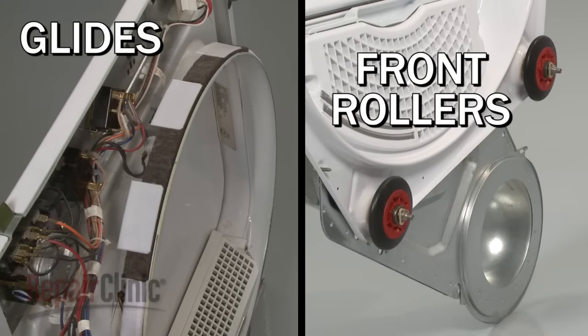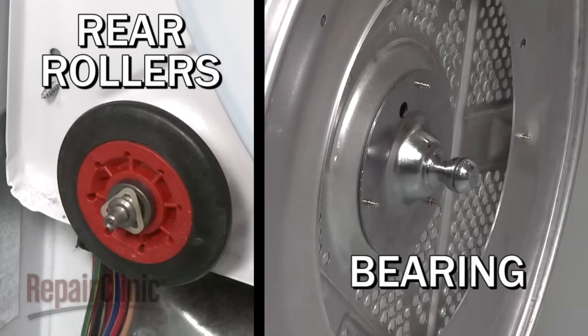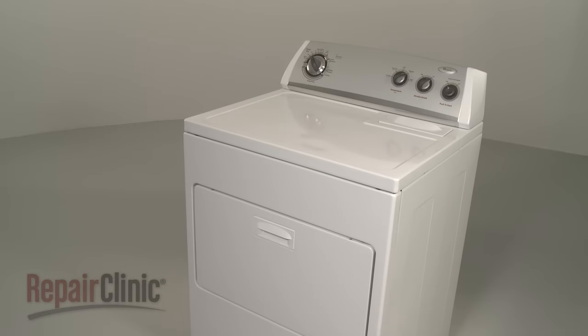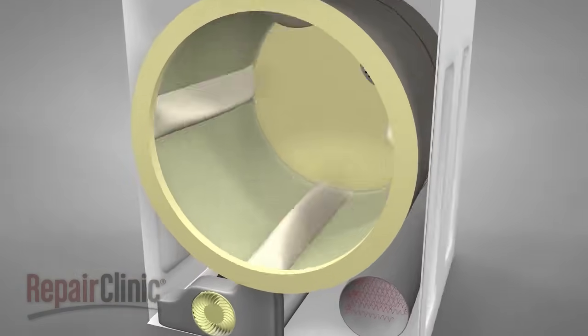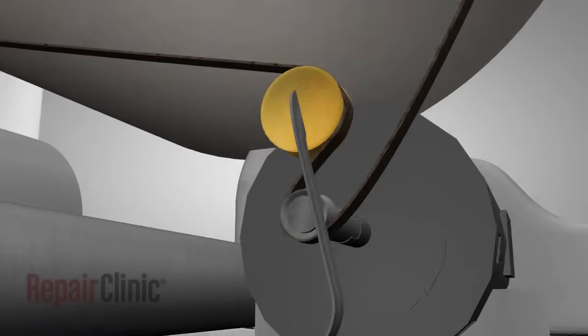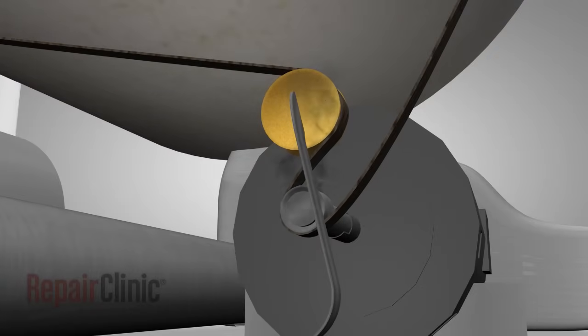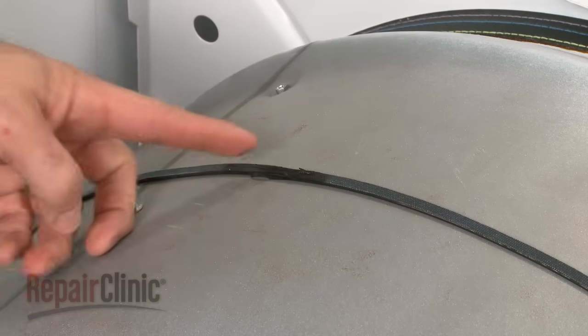The drum is supported by glides or rollers in the front, and rollers or a bearing in the rear, depending on the model. Over time, the drum supports will wear out, and the dryer may become noisy during use. If the drum is overloaded, or if a support roller, glide, bearing, or pulley fails, the belt may begin to slip. It can also fray, and eventually break.